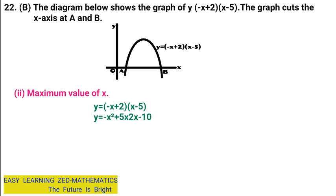So y equals negative x squared, then 5x plus 2x gives me 7x, and negative 10 at the end. As you can see, negative x squared and negative 10 remain unchanged — I've only added 5x plus 2x. Once I've done that, I've come up with the expression: negative x squared plus 7x minus 10.